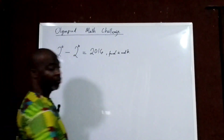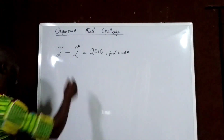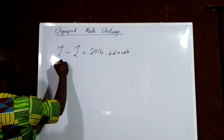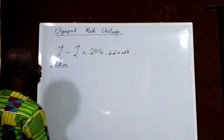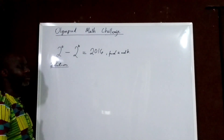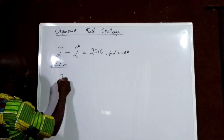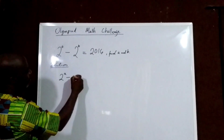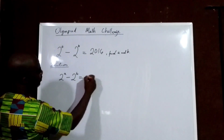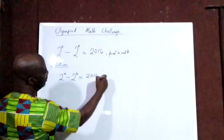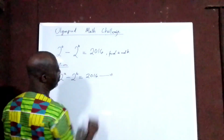So how do we go about this? Very easy. We'll write down the question, which is 2 to the power of A minus 2 to the power of B equals 2016. We are going to call this Equation 1.